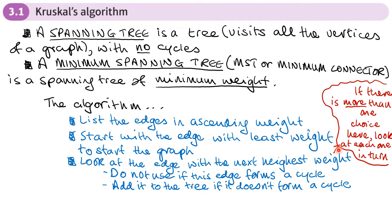It may be that the next edges that you have both have the same weight. If that's the case, if you've got more than one choice, look at each one in turn. It may be that there's only one choice you can make because one of those is going to form a cycle. Maybe one isn't, but consider each one.